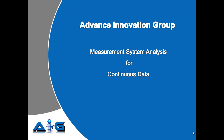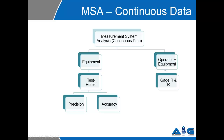If your data is continuous, there are two options. If you were to validate your equipment being used, you would use a method called test retest, which essentially checks for precision and accuracy of your equipment. If you were to check for operator and equipment both, you would use the gauge R&R ANOVA method. There are several other options available, but I am simply discussing these two.